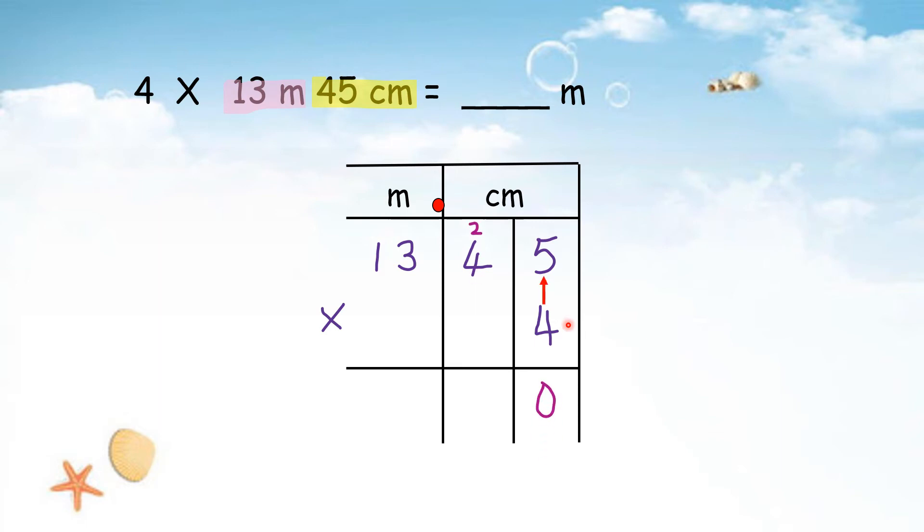4 times 5, 20. 4 times 4 is 16, and then plus this 2, it is 80. 4 times 3, 12, plus 1, 13. 4 times 1, 4, plus 1 is 5. Then we refer to the final answer in m, so we circle m in the 1-2 box. M is including point, with point. So we will put a point here. Means that 53.80 meter.